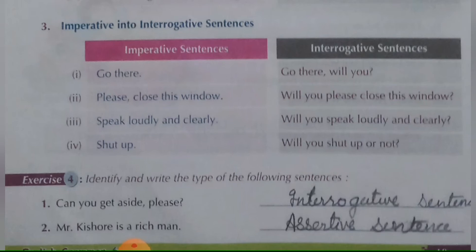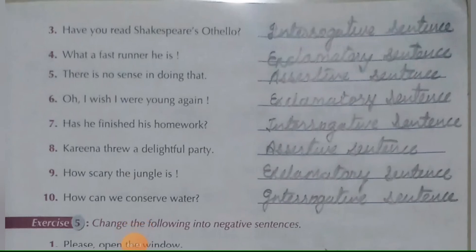Third: 'Have you read Shakespeare's Othello?' — this is an interrogative sentence because it ends in a question mark and starts with the helping verb 'have.' Fourth: 'What a fast runner he is' — this is an exclamatory sentence. Fifth: 'There is no sense in doing that' — this is an assertive sentence. Sixth: 'Oh, I wish I were young again' — this is an exclamatory sentence because it starts with the interjection 'O' and ends in an exclamation mark.